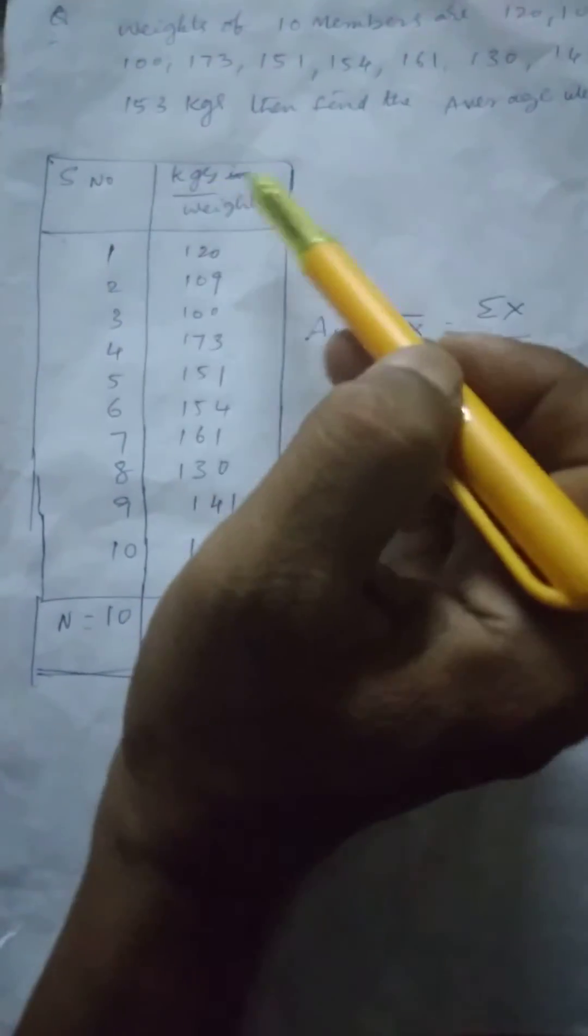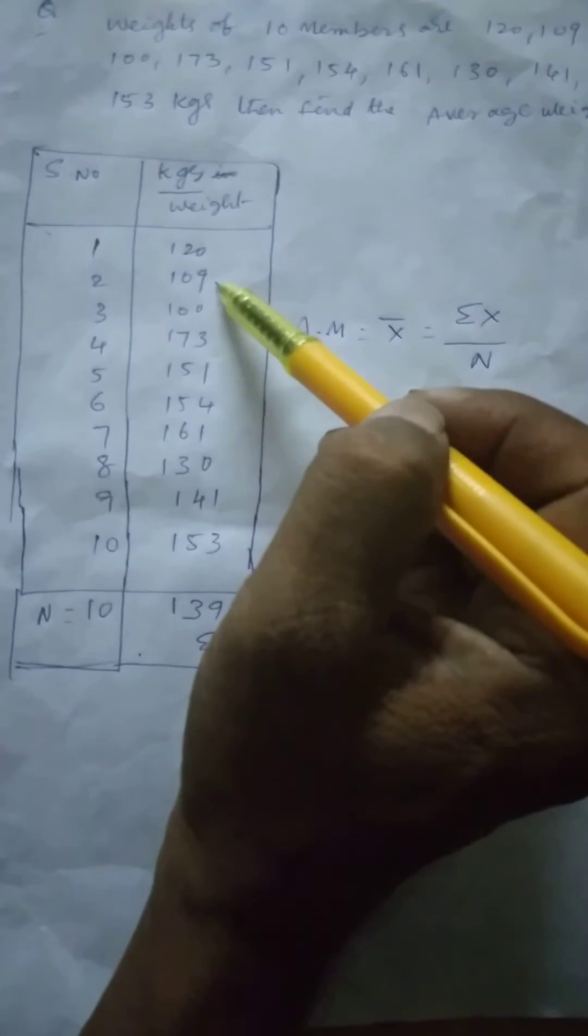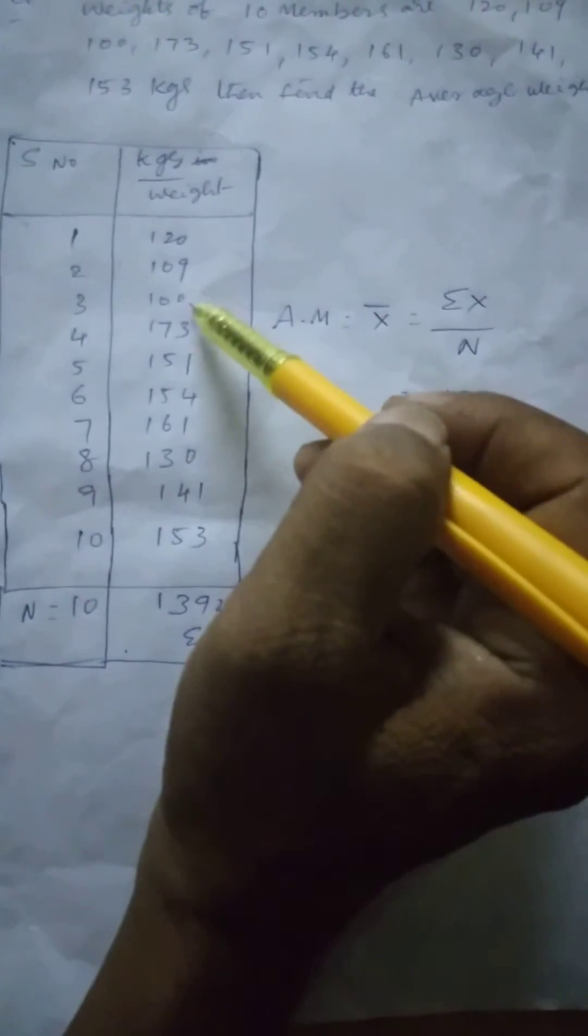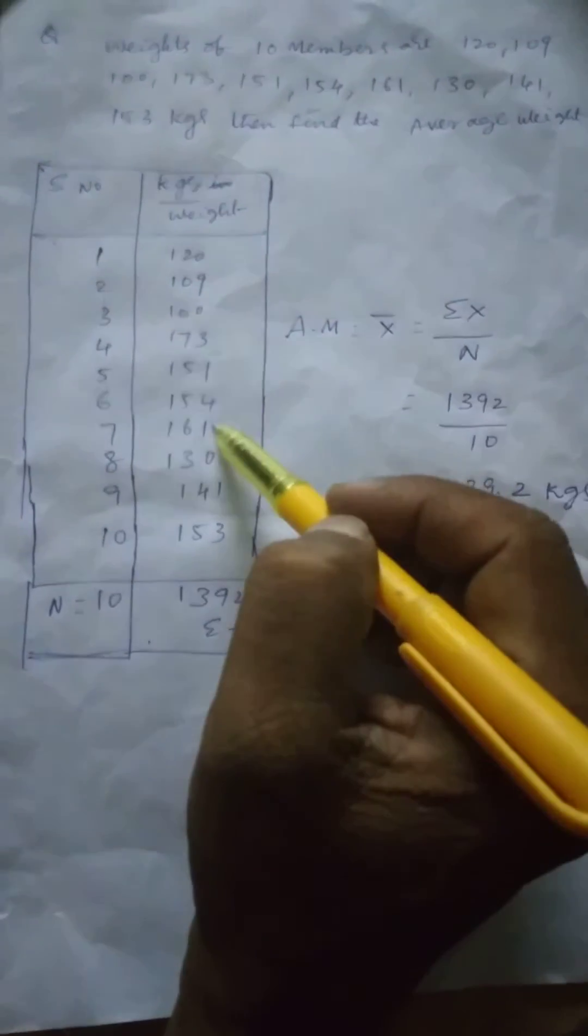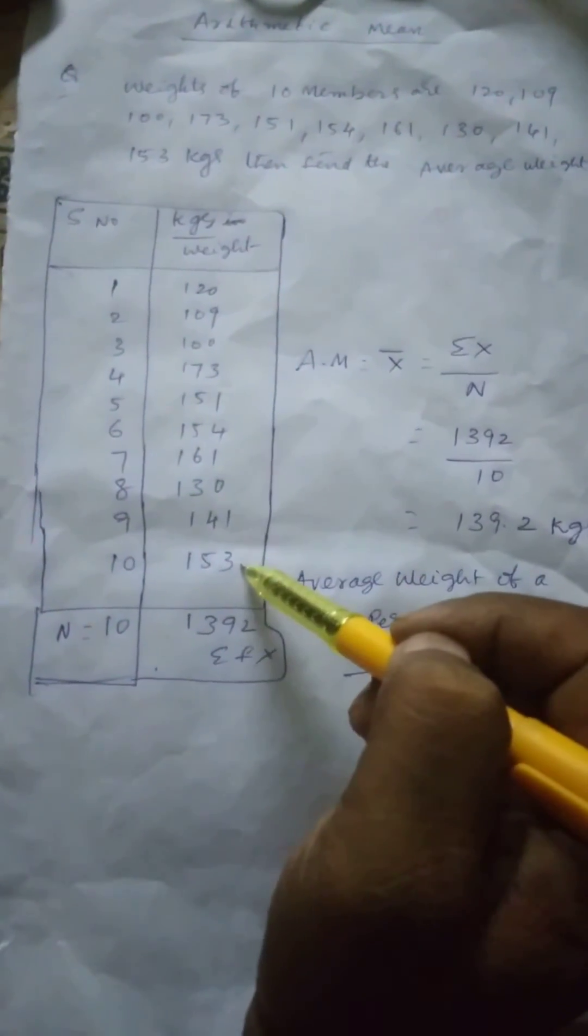So here is serial number 1. This case is weight in kg. 1: 120, serial number 2: 109, 100, 173, 151, 154, 161, 130, 141, 153.